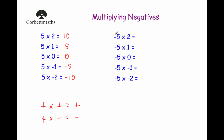Now we're going to look at what happens when we multiply negative 5 by 2, then by 1, then by 0, then by negative 1 and negative 2. A negative multiplied by a positive will also give us a negative. So negative 5 multiplied by 2 is negative 10, negative 5 multiplied by 1 is negative 5, and negative 5 multiplied by 0 is 0. Each time our answer is getting 5 bigger, increasing by 5.